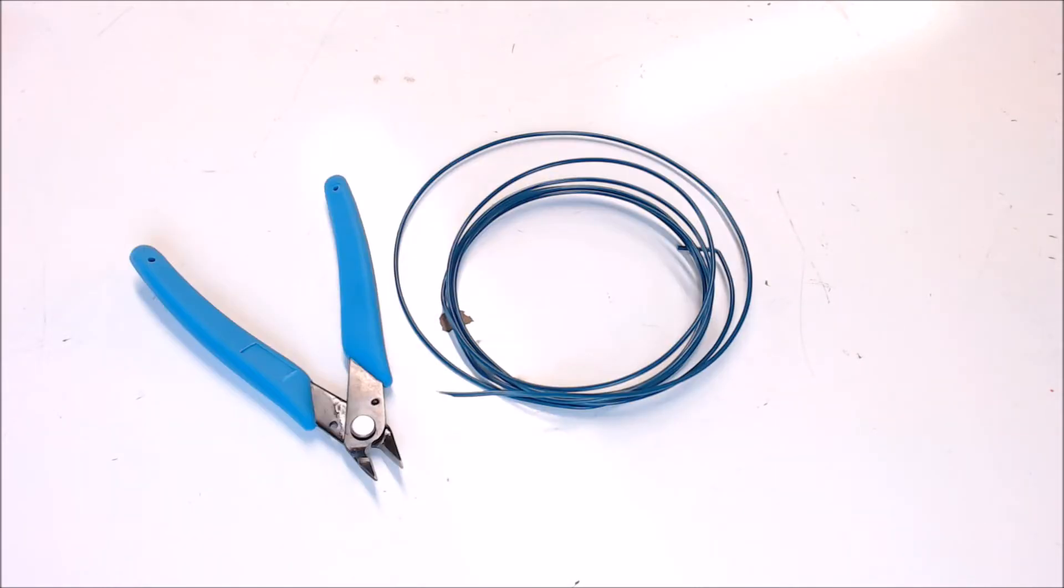Side cutters. These are very useful when dealing with filament and zip ties. For the filament, you can get that perfect 45 degree angle on it and it makes it much easier to load.